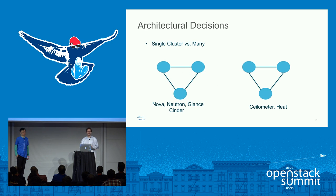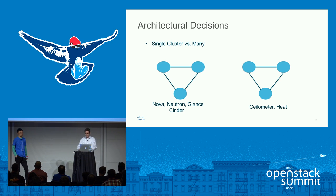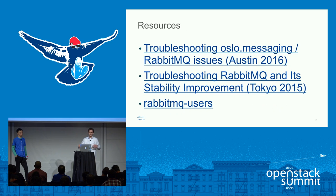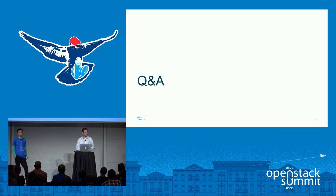As for architectural decisions: if we could go back and redo things from the beginning, we probably would not use a single Rabbit cluster for all services. We would definitely take the chatty services — maybe stuff like Ceilometer and Heat — and put those on a separate cluster. There's no need to put everything in one cluster because you're just asking for failure. It's better to limit your failure domains so that if one thing fails, it doesn't affect all your services. There are also a lot of good resources out there — some good talks in Austin on troubleshooting Oslo, talks from Tokyo on Rabbit, and the RabbitMQ users group where you can search archived messages and reach out to RabbitMQ developers.